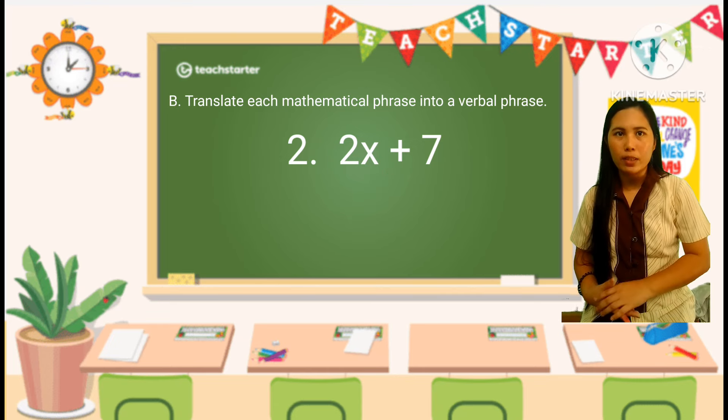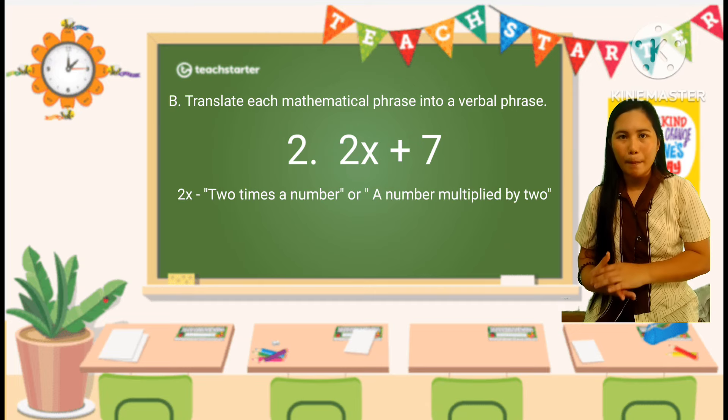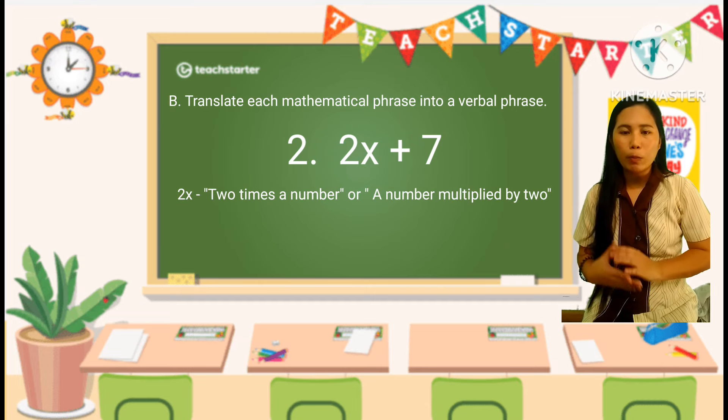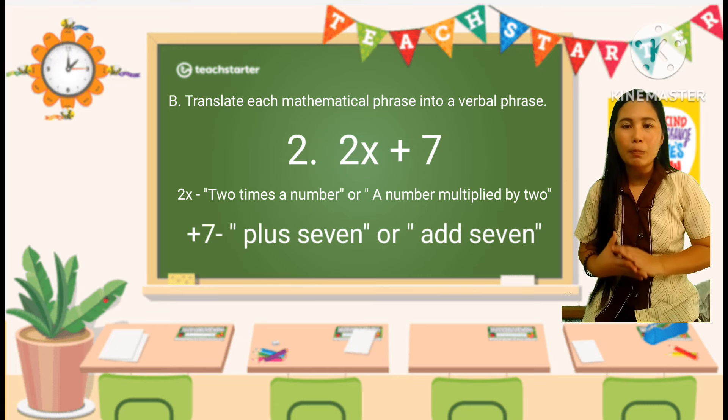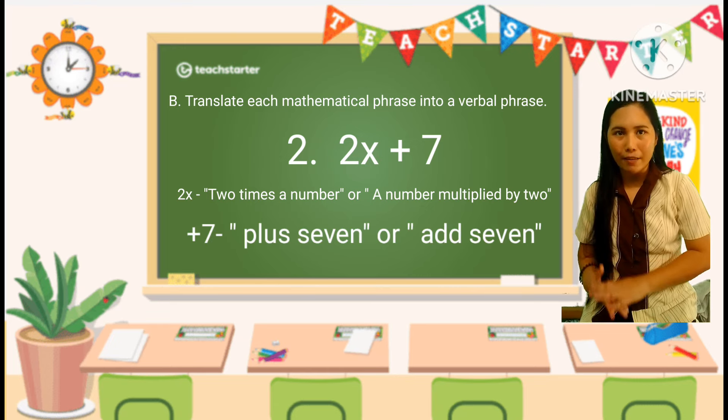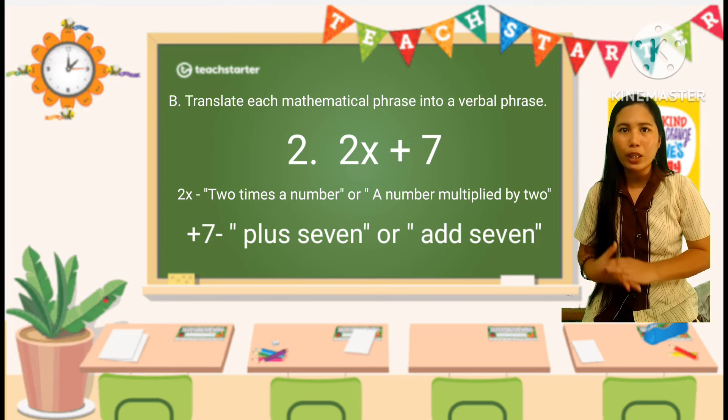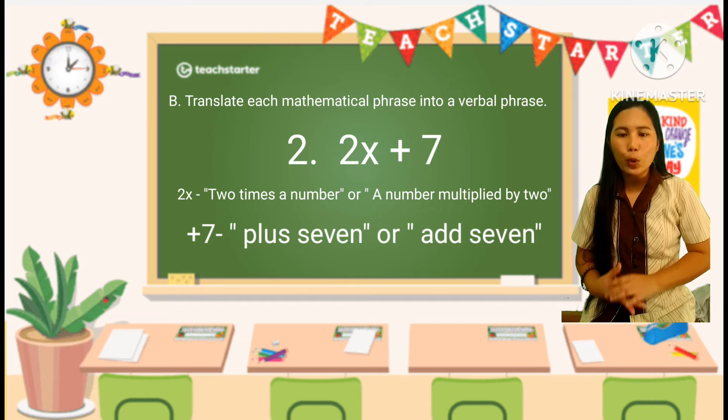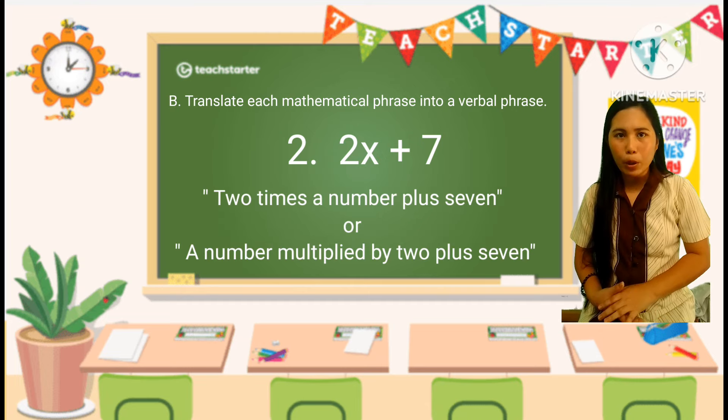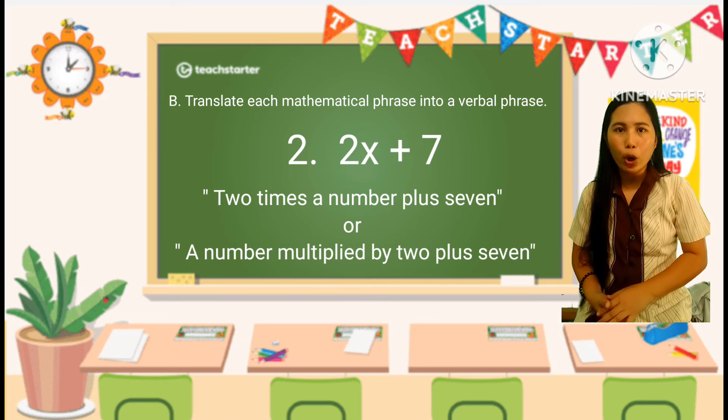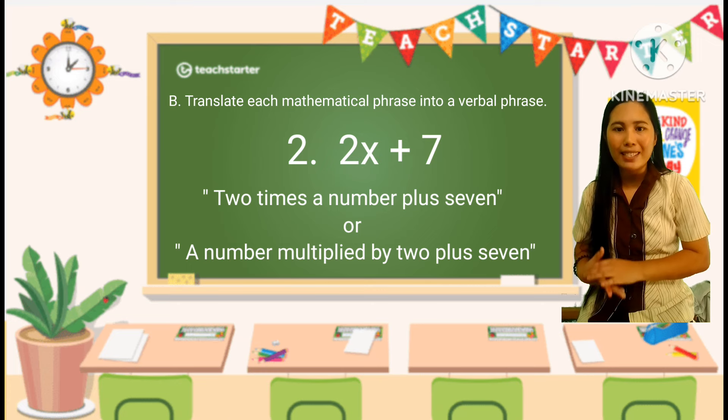So, translate the parts into words. 2x can be described as 2 times a number or a number multiplied by 2, and plus 7 can be described as plus 7 or add 7. Combine the descriptive terms. Putting it together, the verbal phrase for 2x plus 7 is 2 times a number plus 7, or can be a number multiplied by 2 plus 7.